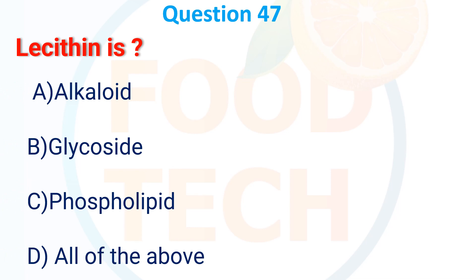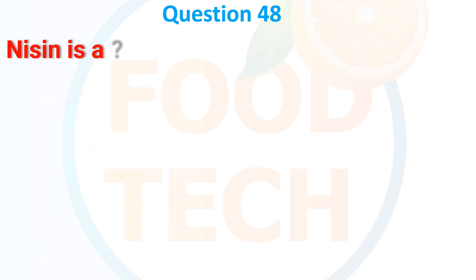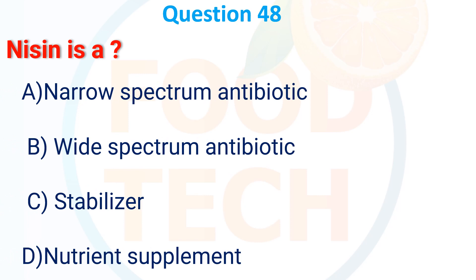What is the function of a sequestrant? A. They are added to keep food stable, B. They complex with metals like copper and iron to prevent oxidization, C. Added for color, D. They keep the food oxidized. The answer is B. They complex with metals like copper and iron to prevent oxidization.